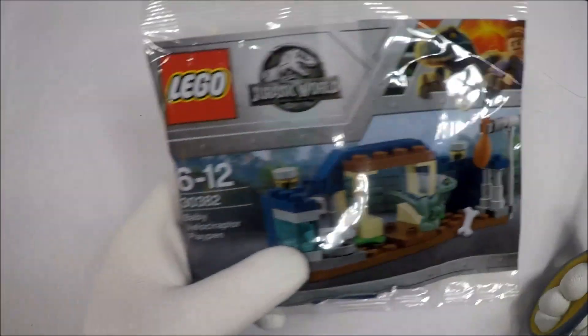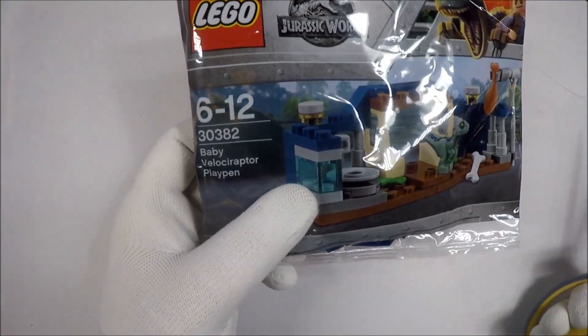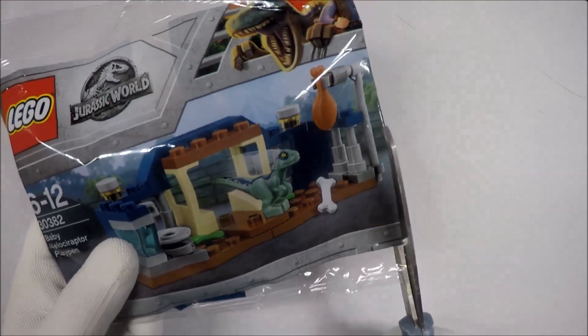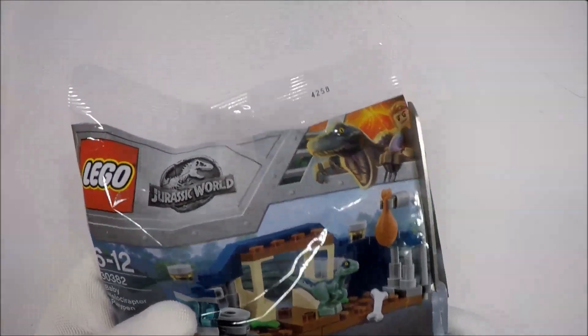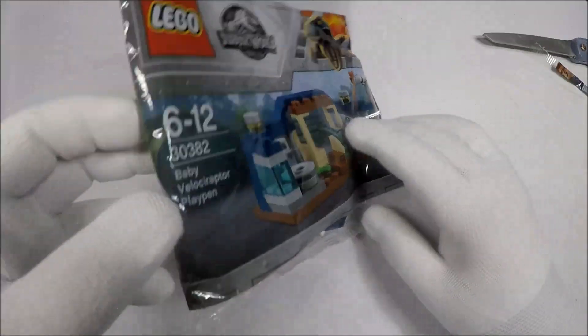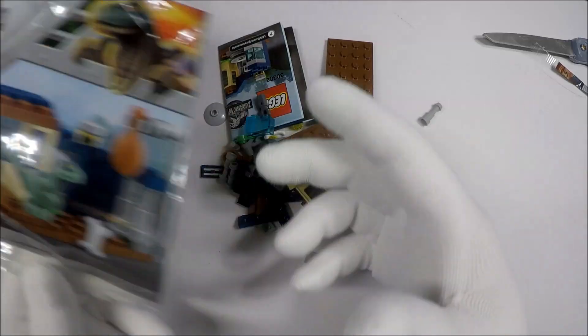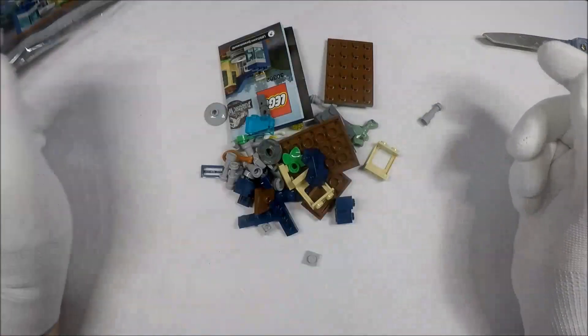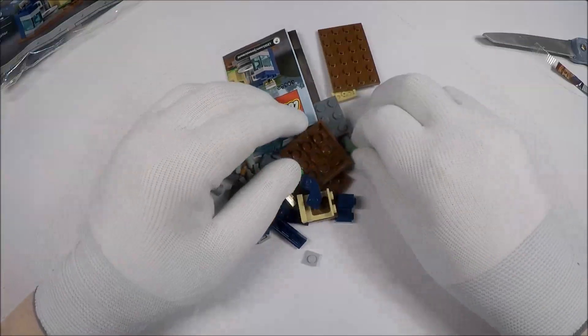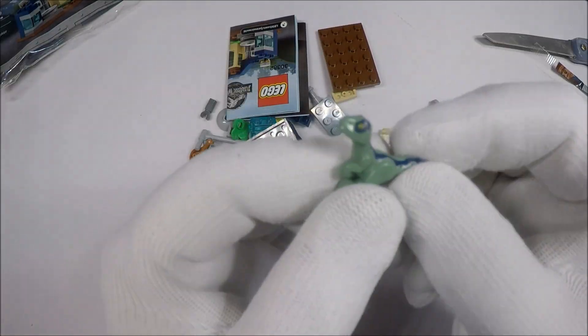So, let's open this thing up and take a look. Oh, by the way, it's 30382 Baby Velociraptor Playpen. So, let's take a look. Oh, things are already trying to escape. All right. So, first of all, and I guess most important, is obviously the Baby Velociraptor.